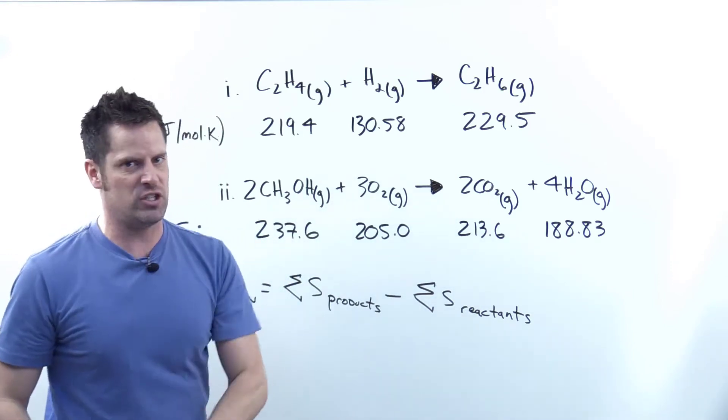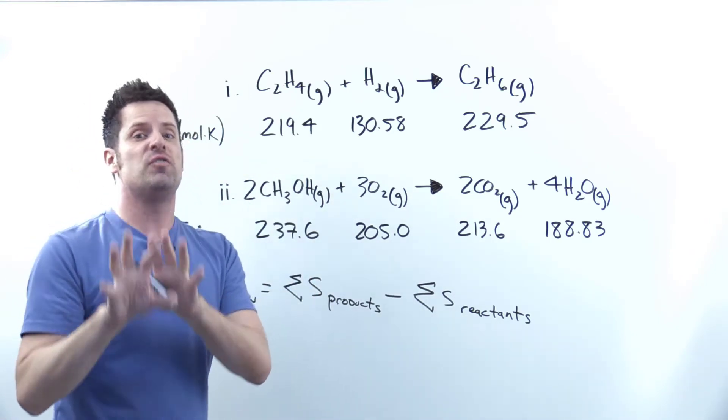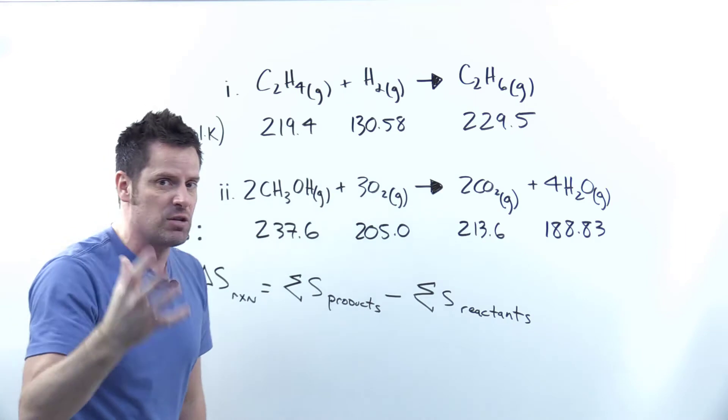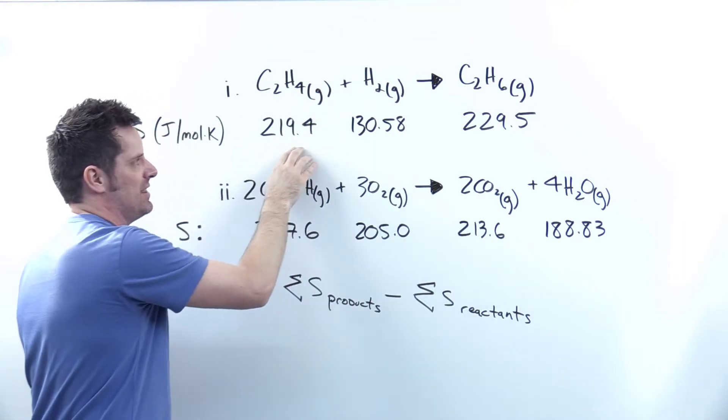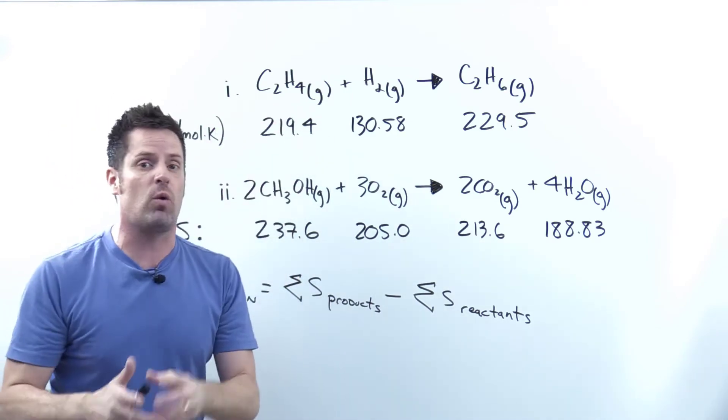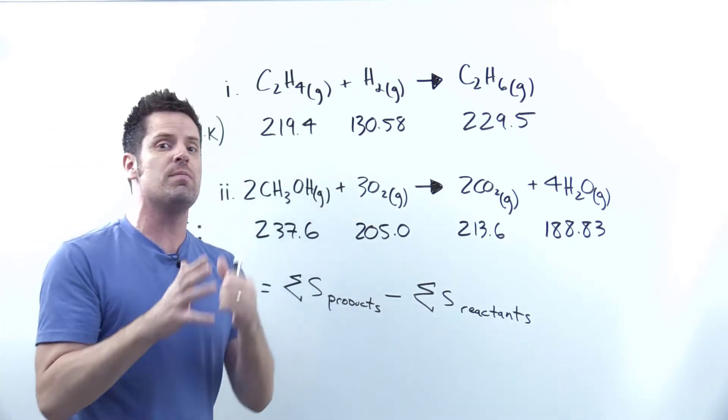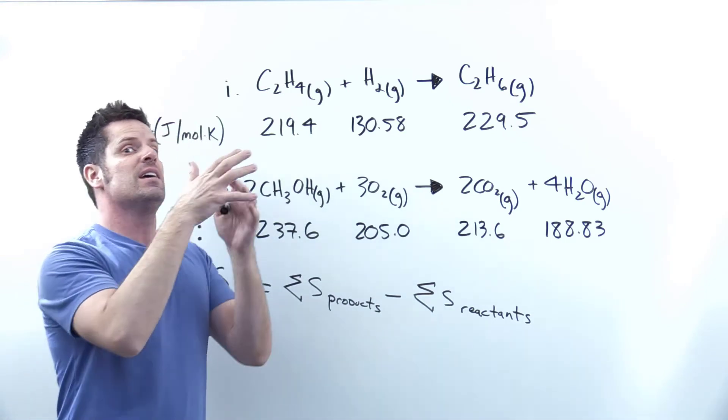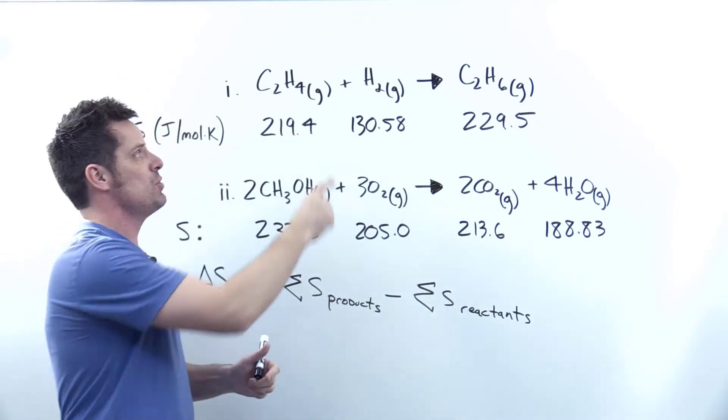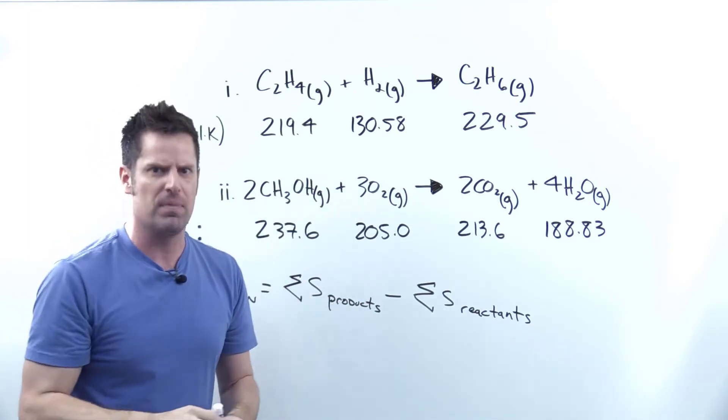One thing I stress for my students is that when you look up data on a table, you need to make sure that you identify the correct formula and physical states—solid, liquid, or gas. For example, if you look up C2H4, you need to make sure that you're looking up gas and put the number associated with C2H4 gas. If you find a table that shows the entropy value for C2H4 liquid or solid, those values will be different. You need to pay attention to the little letter S, L, or G written next to the formula in the equation, or you might get it wrong.